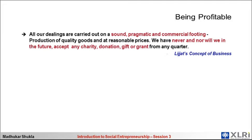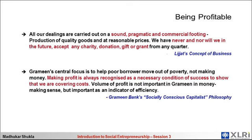Grameen Bank was founded by Professor Muhammad Yunus and created the template for micro-credit across the world. It is a for-profit venture, but profit making or profit maximization per se is not the purpose. The purpose was to move the poor borrowers out of poverty, not to make money. As Yunus said, making profit is recognized as a necessary condition of success — that you are covering the cost and operating efficiently. But the volume of profit is not important in the money-making sense; it is important as an indicator of efficiency.